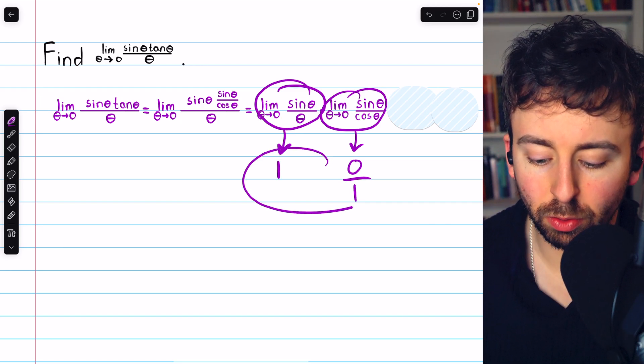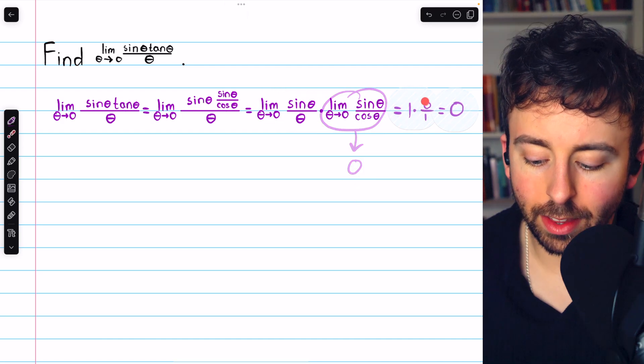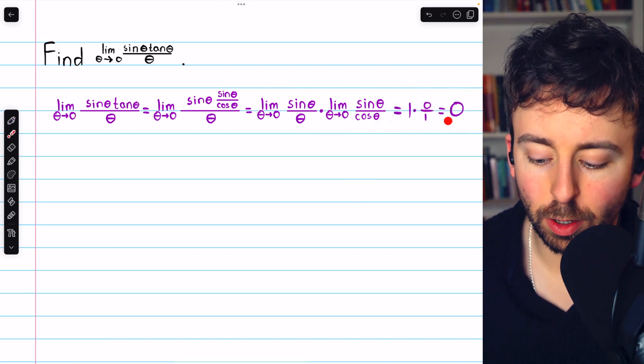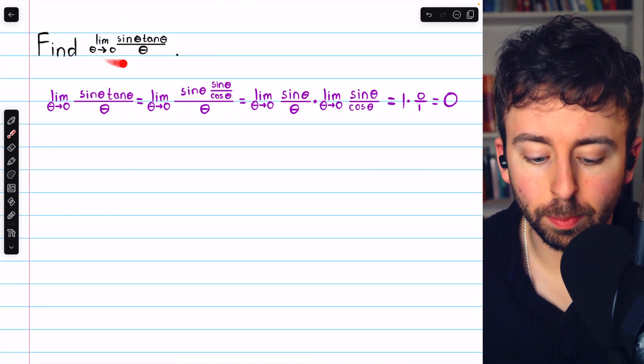So the product is just one times zero. Hence the original limit is equal to zero. And that's how to evaluate this simple trig limit.